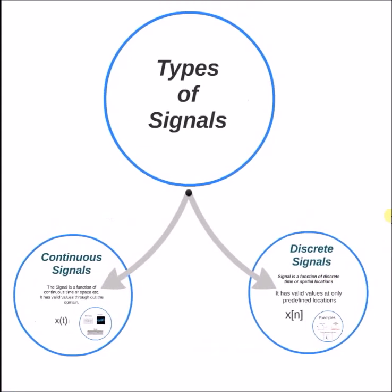Thus to summarize, there are two different types of signals: continuous signals and discrete signals. Continuous signals basically exist at all possible values of the independent variable within the defined interval, and discrete signals only exist at predefined locations within the interval.